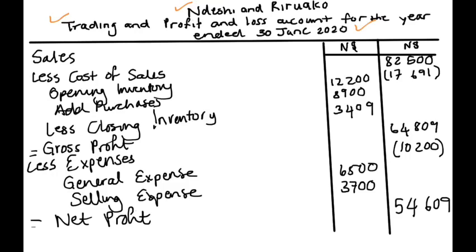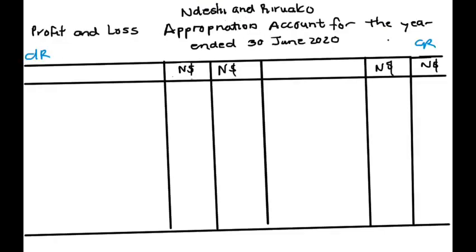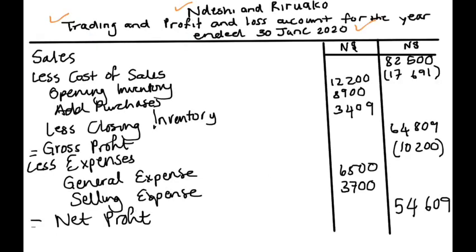We now move to the appropriation account, which has a debit and credit side. We treat this as an equity account. We are not given any opening balance, so we start with the net profit of 54,609.